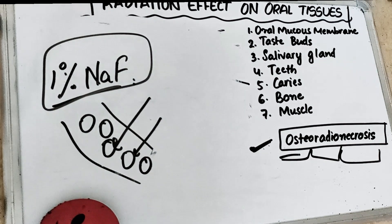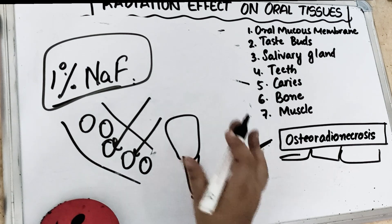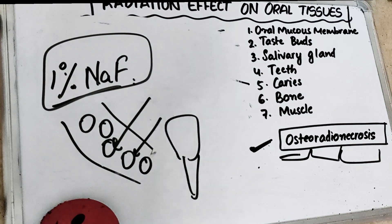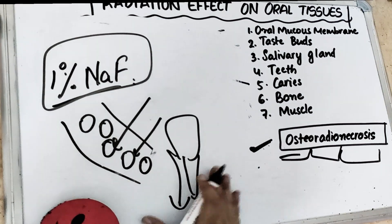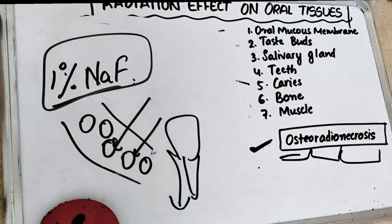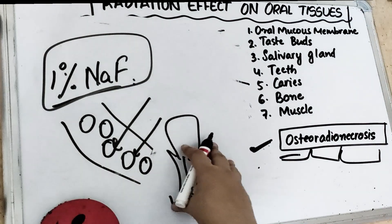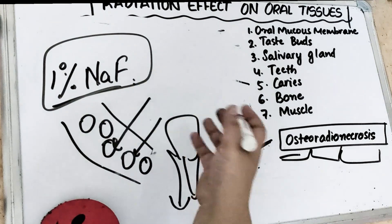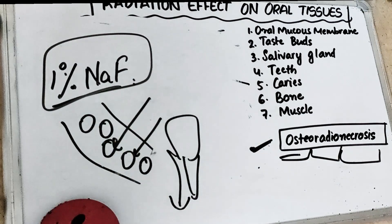If we extract teeth after radiation therapy, the mucous membrane breaks and infection enters the bone, leaving a non-healing wound that develops into osteoradionecrosis. To prevent this, we extract teeth with poor prognosis before the radiation therapy itself. For local anesthesia, we give low epinephrine lidocaine. To treat osteoradionecrosis, we give hyperbaric oxygen therapy, and we may perform mucocutaneous flap surgery — sometimes taking the fifth rib.